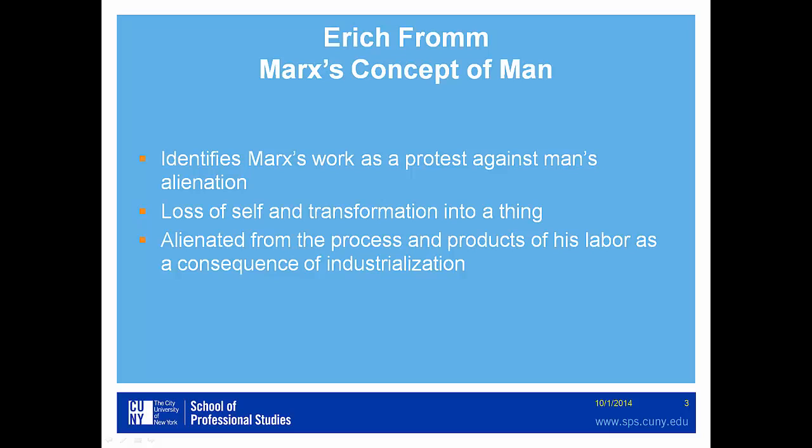Fromm identifies Marx's work as a protest against man's alienation — using the term man in the generic sense — the loss of self and the transformation of human beings into things, which Marx perceived to be part of the ongoing social reality of the 19th century. Man was alienated from the process and from the products of his labor as a consequence of industrialization and the division of labor.